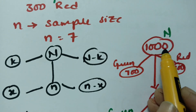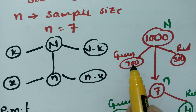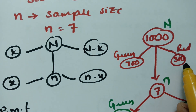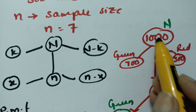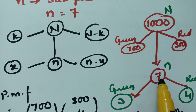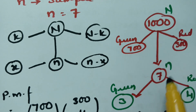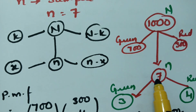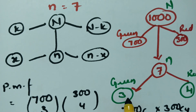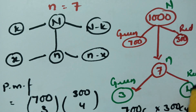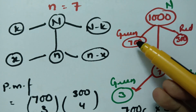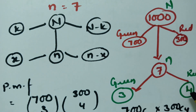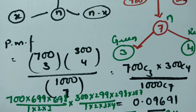In summary: there are 1000 balls total — 700 green and 300 red. Out of 1000, seven balls are selected (sample size n = 7). The probability of getting three green balls and four red balls is given by 700·C3 × 300·C4 divided by 1000·C7, which equals 0.09691. This is the shortcut notation for the hypergeometric distribution formula.